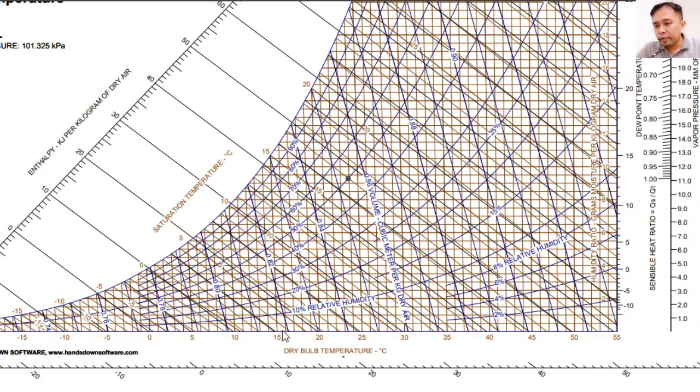Now, the first property is the dry bulb temperature. This is the temperature that is reflected or that is read from your thermometer. This one is the axis of your dry bulb temperature. This line. So as you go to the left, your dry bulb temperature decreases, and as you go to the right, your dry bulb temperature increases.